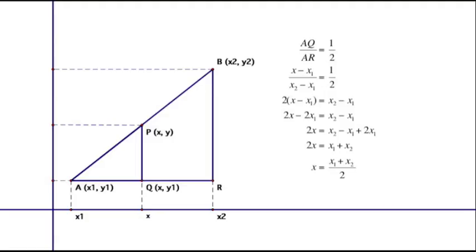Now we have established an equation and we want to get X by itself on the left hand side. So we will firstly cross multiply. Multiply the denominator on the right hand side, 2, with the numerator on the left hand side and we get 2(X minus X1) equals X2 minus X1. Let's expand. 2X minus 2X1 equals X2 minus X1.